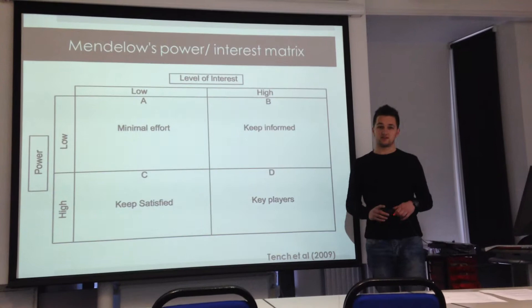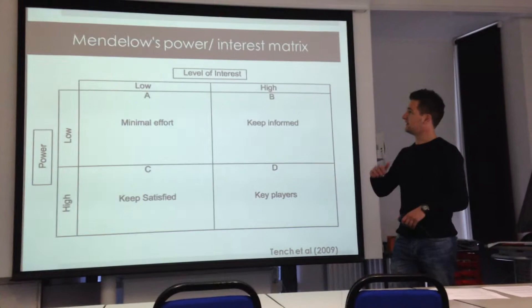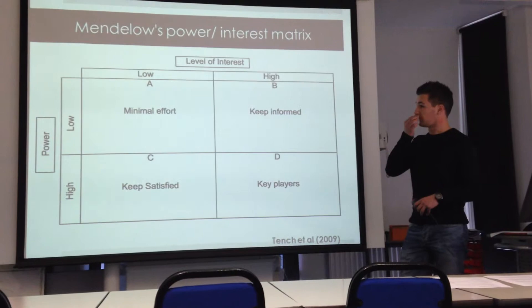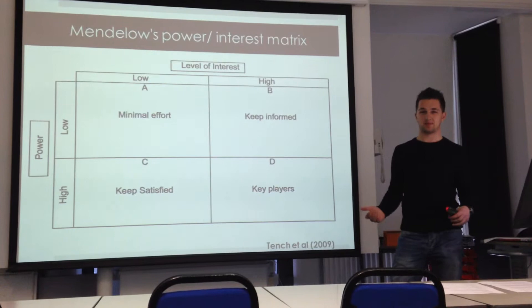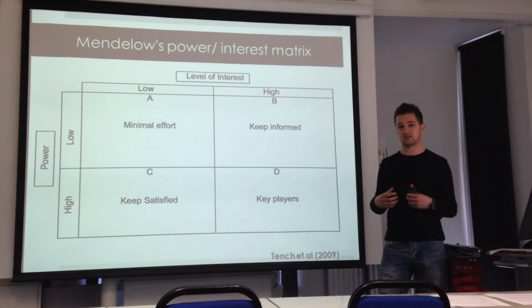We need to prioritise our stakeholders using Mendelow's power-interest matrix. It plots the power a stakeholder has against their interest, showing the impact they could have. If they have low power and low interest, it takes minimal effort to keep them happy, as they can't really do much — they haven't got the power or the interest to impact the project in a negative way.